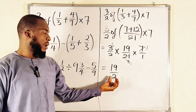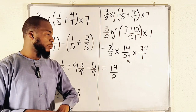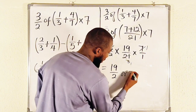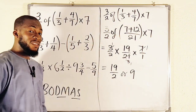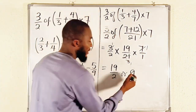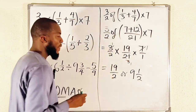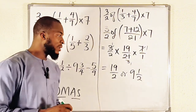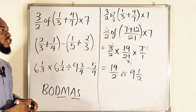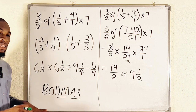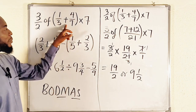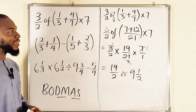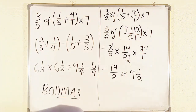If you like, you can write this as a mixed number. How many times can 2 go into 19? Exactly 9 times. 9 times 2 is 18, so we have a remainder of 1. That gives us 9 and 1 over 2. This is how to simplify fractions using BODMAS. If you fail to apply BODMAS you will get a different answer, but this is the most accurate answer.